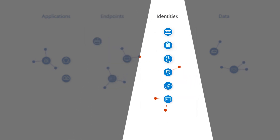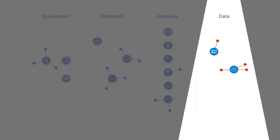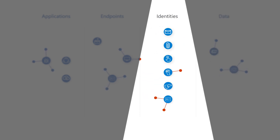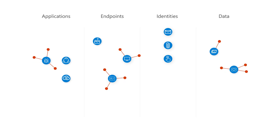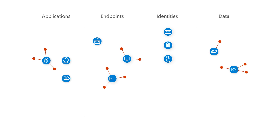Domain-based point solutions are often siloed with different teams working in each, so that context isn't there and it takes too long to put the pieces together. When perimeter protection is domain-based, so too is the response. If we only understand a threat within the boundaries of a single domain, we might not discover, understand, or remediate it.